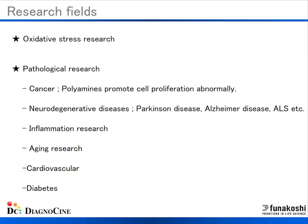Here are some research fields associated with polyamines. Polyamine red is suitable for oxidative stress research because polyamine functions as an antioxidant. It is also suitable for pathological research. In cancer cells, polyamines are known to promote cell proliferation abnormally due to an increase in ODC enzyme activity, resulting in upregulated expression of polyamines, making polyamines a cancer marker.